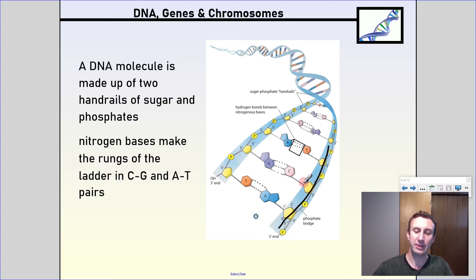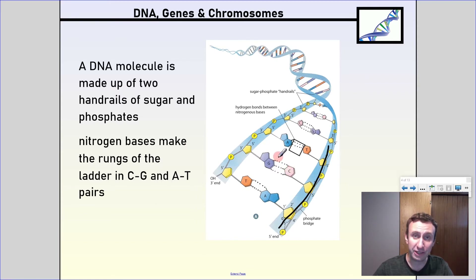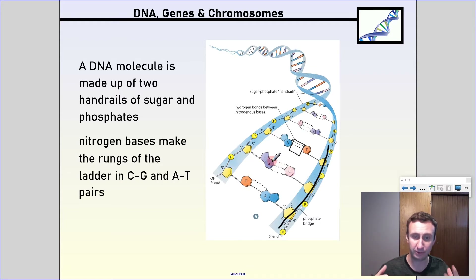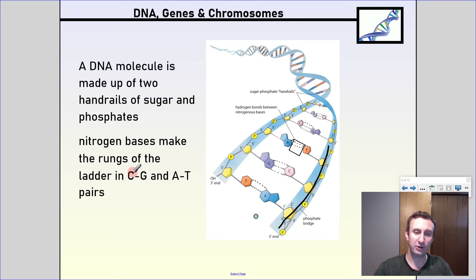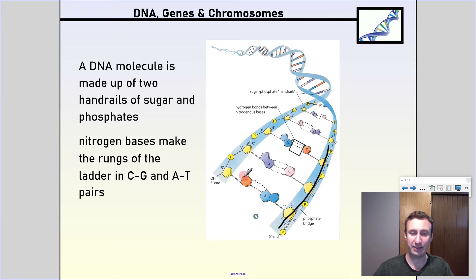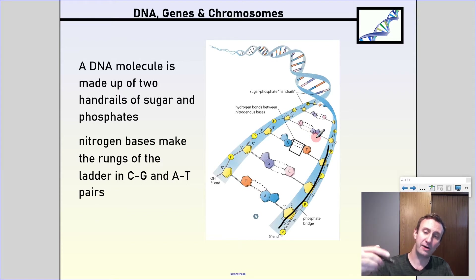In the middle, we have the actual rungs of the ladder — that's the nitrogen bases, so they have nitrogen in them. They pair up in a specific way: C always goes with G, and A always goes with T. So essentially these rungs are either going to be a C and a G or an A and a T, always. They can be flipped — A and T, then T and A, then G and C, then C and G — but always the rungs of the ladder are made up of these pairs of nitrogen bases.